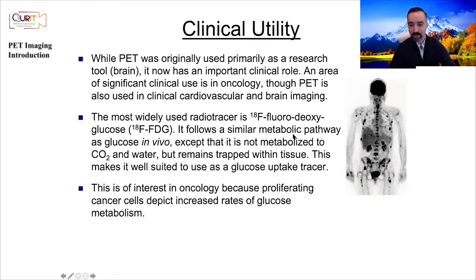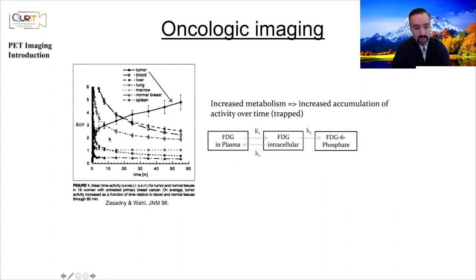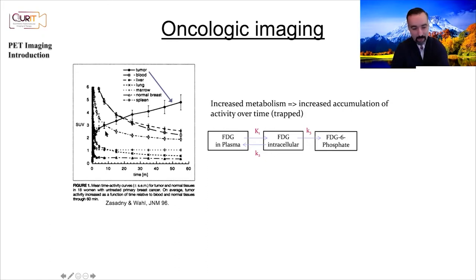We think of FDG as a glucose analog — sometimes we call it radiolabeled sugar — it behaves like glucose and basically allows you to visualize and quantify metabolism. The standard uptake value in the image represents the numbers you get as a function of time. This is a metric we will revisit in the future — a normalized metric where a value of one represents background, and values more than one depict higher metabolism.